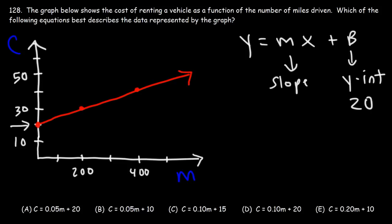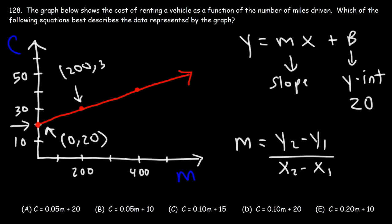Now, the slope is basically the rise over the run. Another way we can calculate the slope is by using this formula: y2 minus y1 over x2 minus x1. So this point here, that's the y-intercept. The x value is 0, the y value is 20. And using the next point, the x value is 200, the y value is 30.